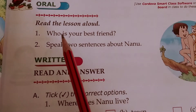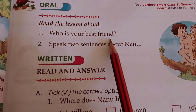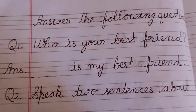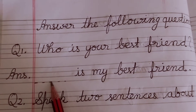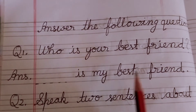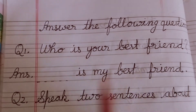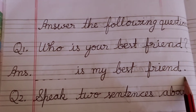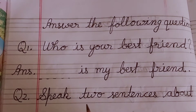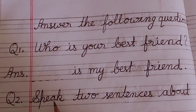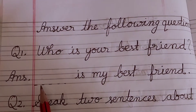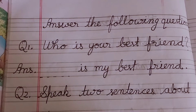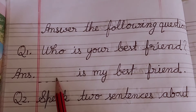Question number 1: Who is your best friend? The answer is, write your best friend's name, and then blank is my best friend. Write like this. Suppose that my best friend is Seema — I will write: Seema is my best friend. And you will write your best friend's name.